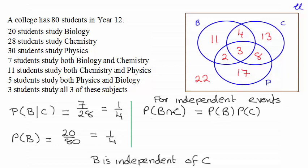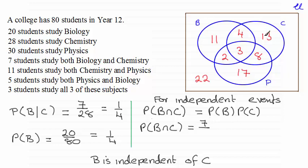Let's check it out. The probability of B intersection C — that's going to be this region here, the overlap between B and C. You can see it's 4 plus 3, a total of 7 out of 80 students — the whole college. So that's 7 out of 80.